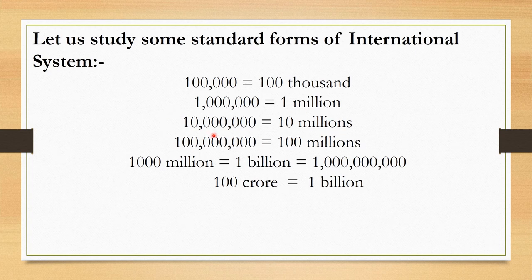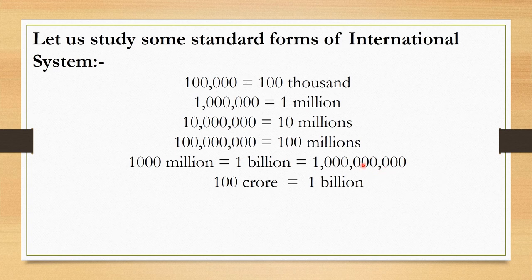Furthermore, one thousand million equals one billion. Counting the places: ones, tens, hundreds, thousands, ten thousands, lakhs, ten lakhs, crores, ten crores, and one hundred crores. Therefore, one hundred crore is equal to one billion in the international numerical system.